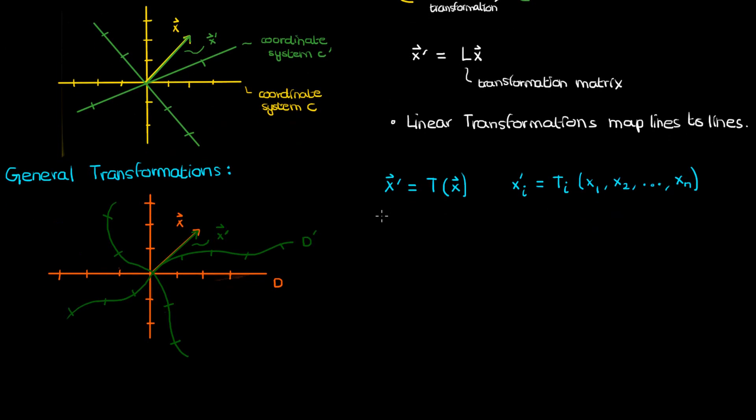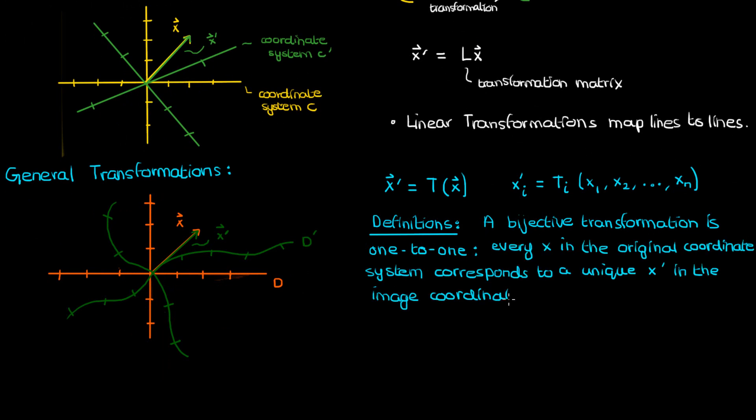There's some important definitions involving general transformations that I'd like to go over. The first is the definition of a bijective transformation which is basically a one-to-one transformation. Every X corresponds to a unique X prime and every X prime corresponds to a unique X.